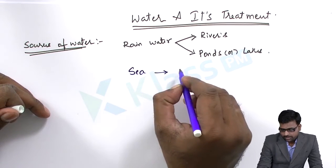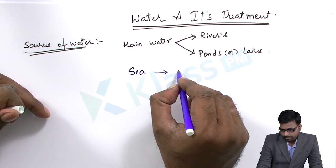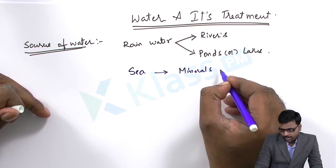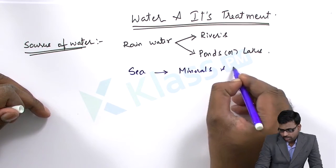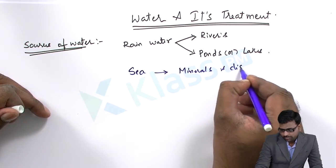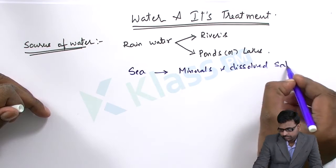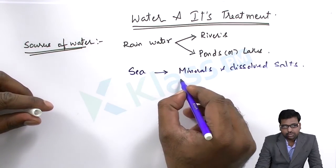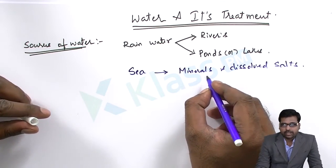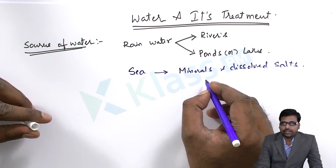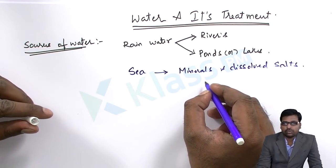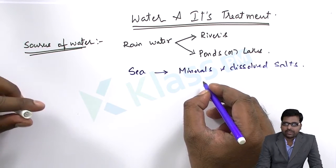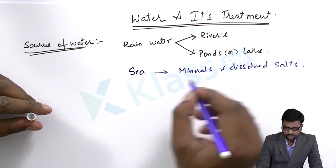Seawater has many minerals and dissolved salts, which cannot be used for agriculture purposes, but can be treated and used for household purposes as well as industrial purposes.